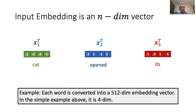Transformers are good at processing sequences of data. Data from different domains can be expressed as a sequence of tensors. An image is a sequence of patches. An audio signal is a sequence of waveform samples. Language is a sequence of words. For example, we have the phrase 'cat opened its,' and each word is converted into a tensor using embedding.